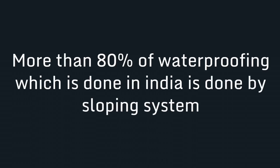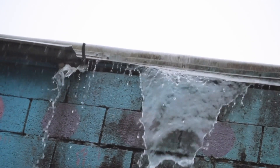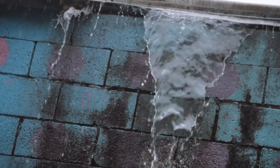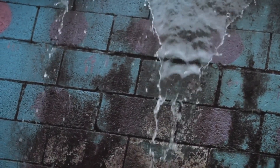But we are not considering enough that concrete will crack — now or in the future. So how can a sloping system be considered a waterproofing system? Yet more than 80% of waterproofing done in this country is through this traditional sloping system, where water splashed onto the surface flows out through the slope and drain pipes carry it outside.